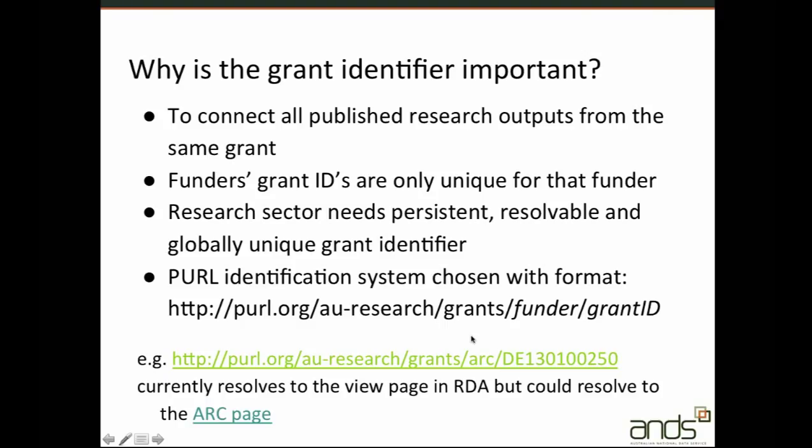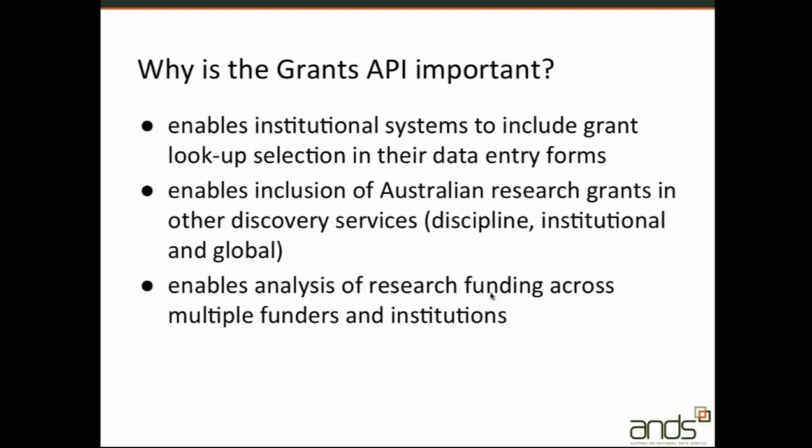We also have an API. There are many systems where access to research grant information is useful. For example, an institutional research portal may want to display all the research grants a researcher has been associated with during their career, or all the grants their institution has participated in. An API allows these systems to interrogate RDA and display this information within their own system. Also, systems that support submission and description of research data and publications could use the API to provide lookup and validation for the grant, so they don't have to rely on a free text box where mistakes can be made.